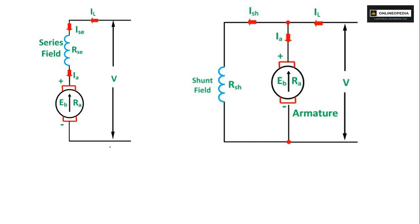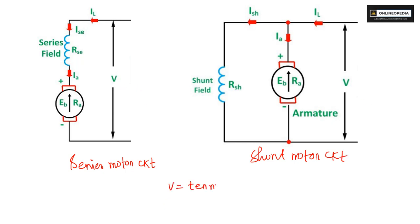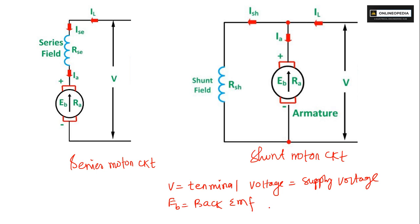This is your series motor circuit and this is your shunt motor circuit. In the circuit, V is your terminal voltage or supply voltage. This is your armature, Eb is your back EMF, Ra is your armature resistance, Rsh is your shunt field resistance, and Rsc is your series field resistance.